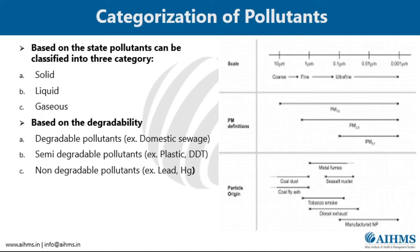There are various types of pollution. Based on degradability, pollutants can be divided into three types: degradable pollutants, semi-degradable pollutants, and non-degradable pollutants. For example, domestic sewage is degradable; plastic and DDT fall into semi-degradable; and lead and mercury are non-degradable pollutants.